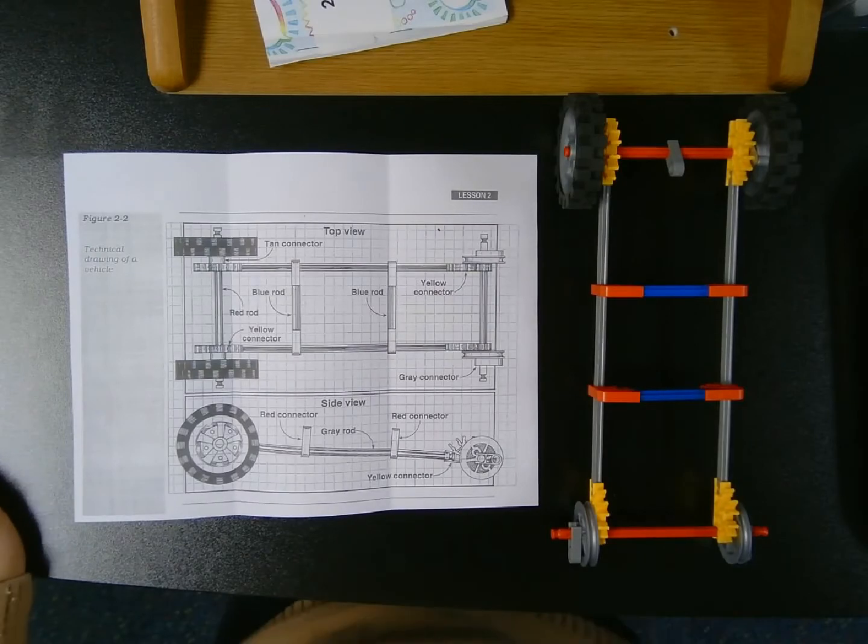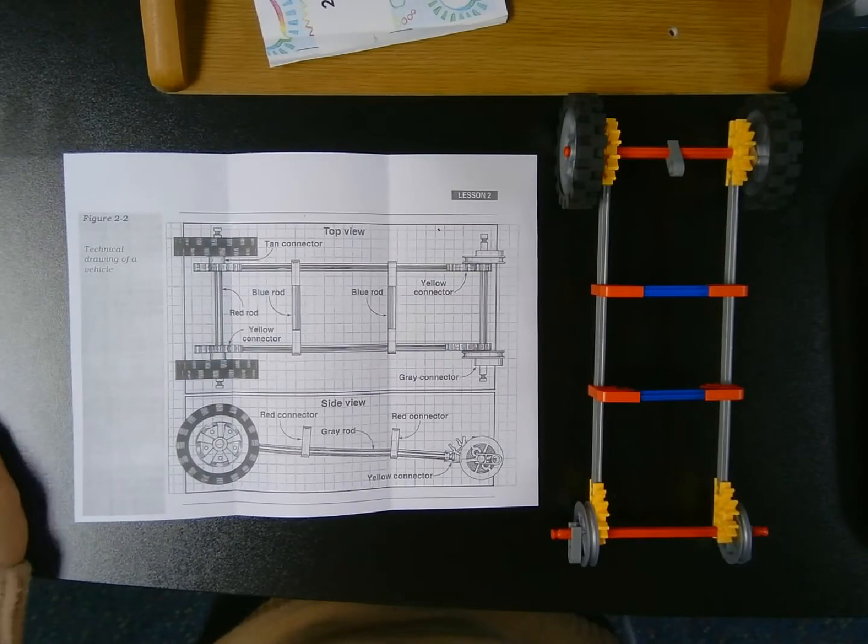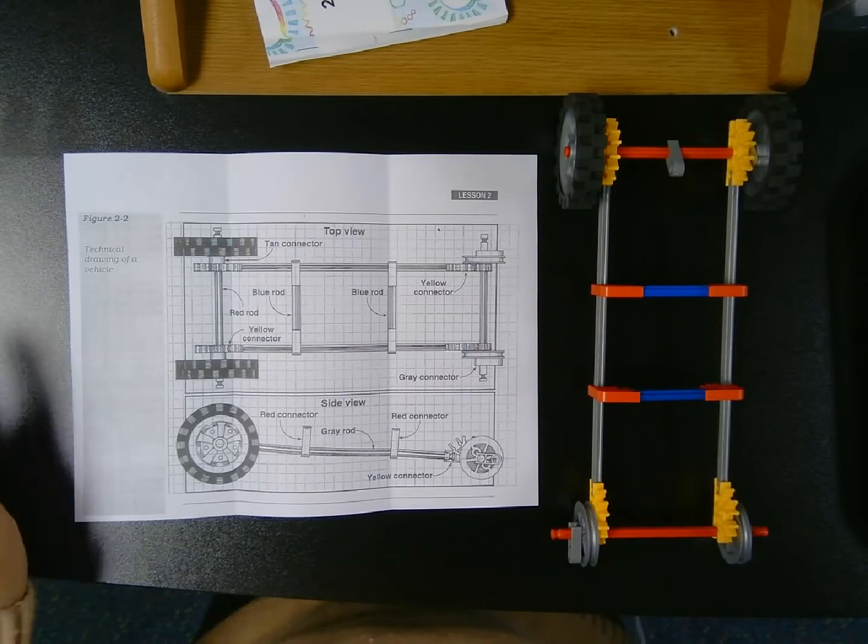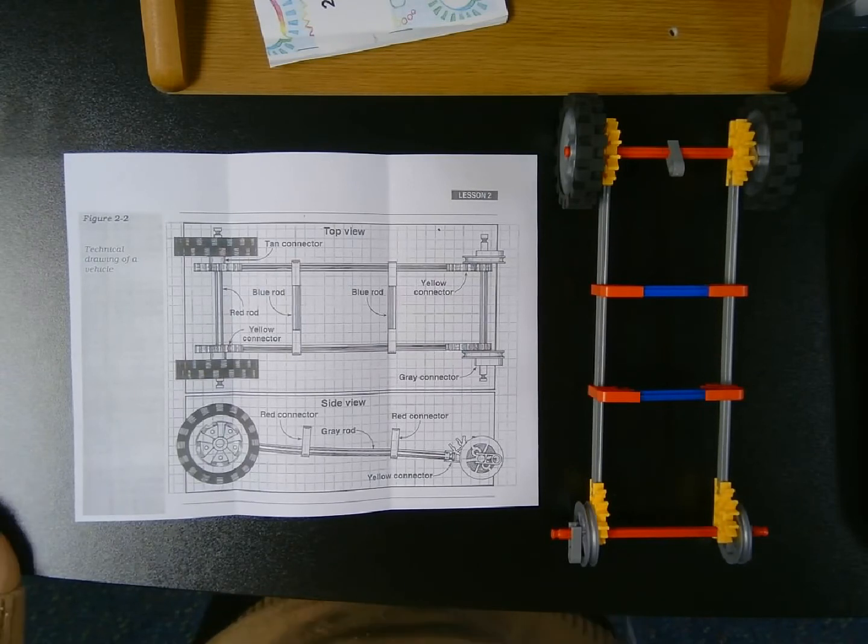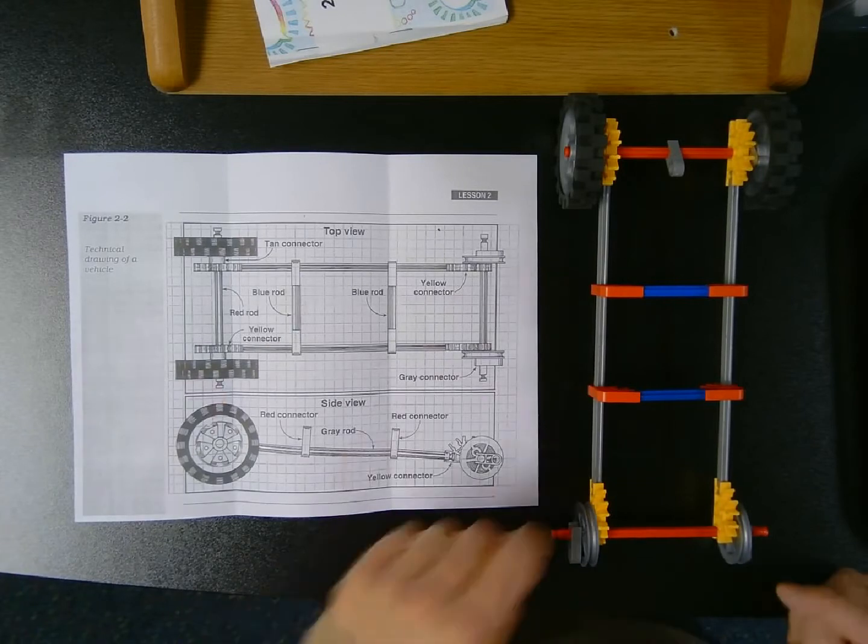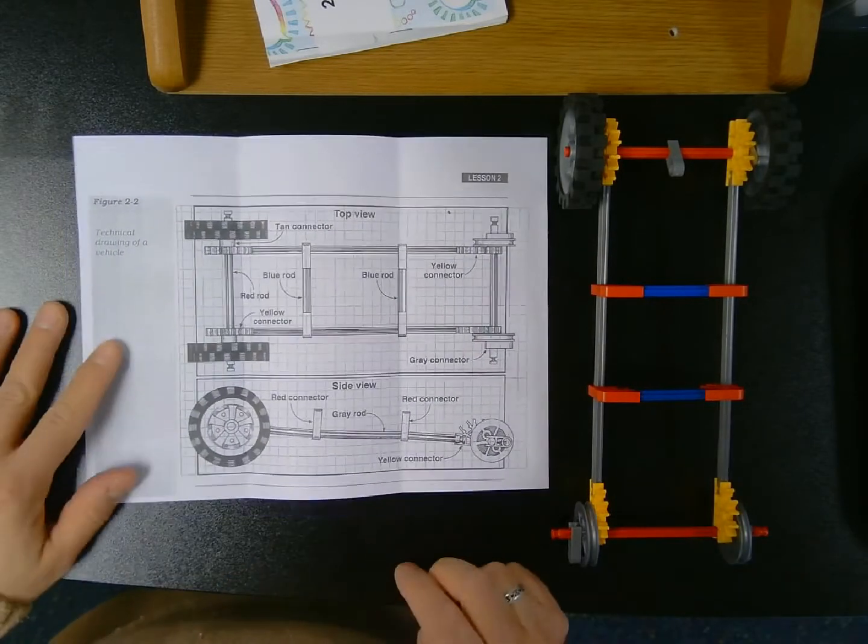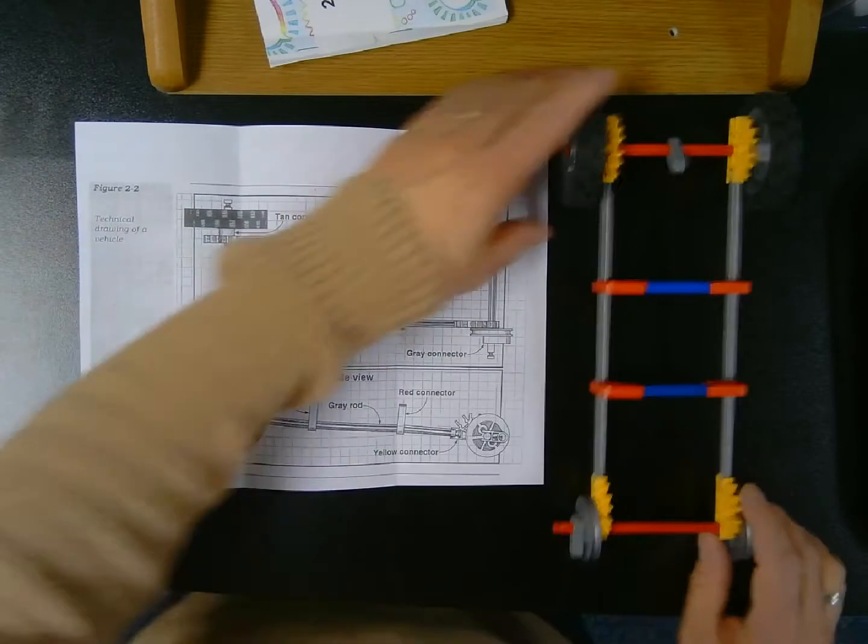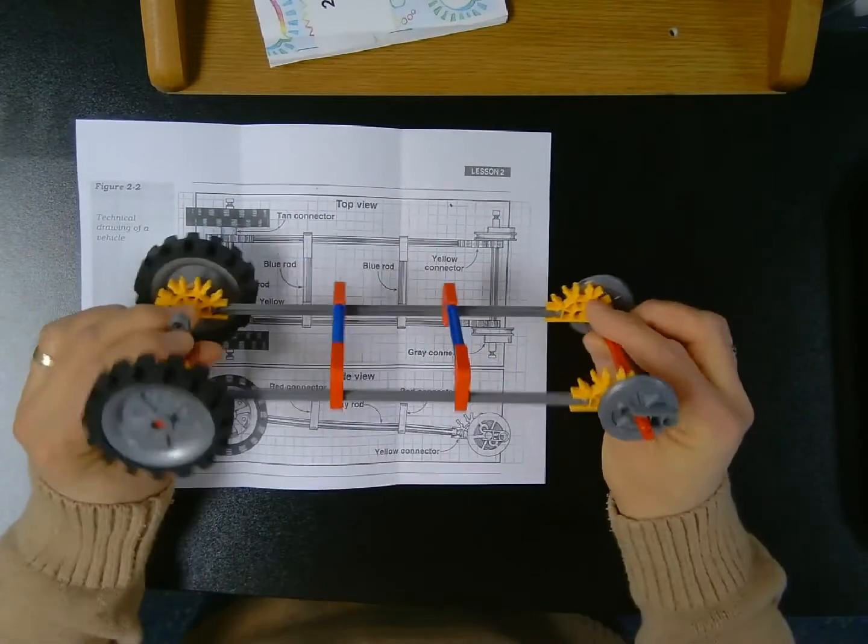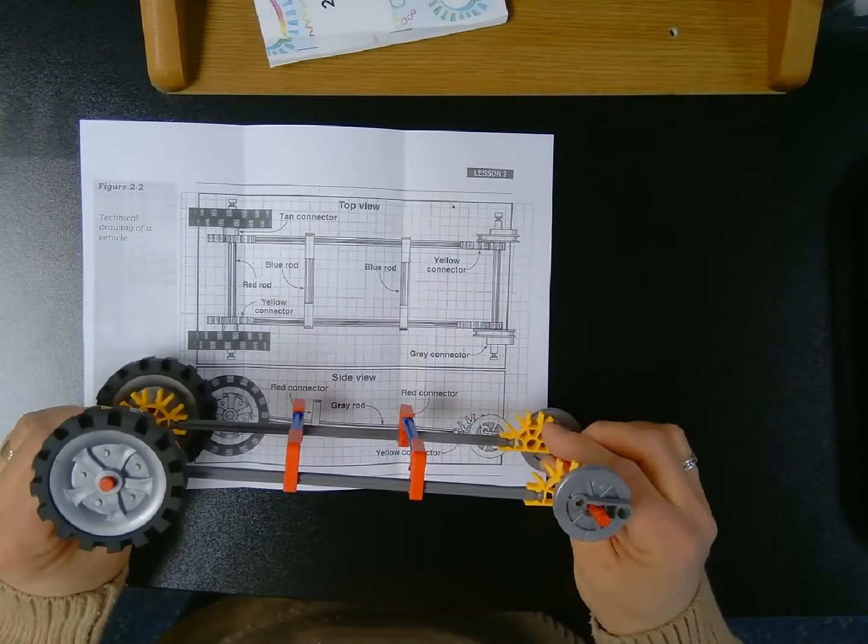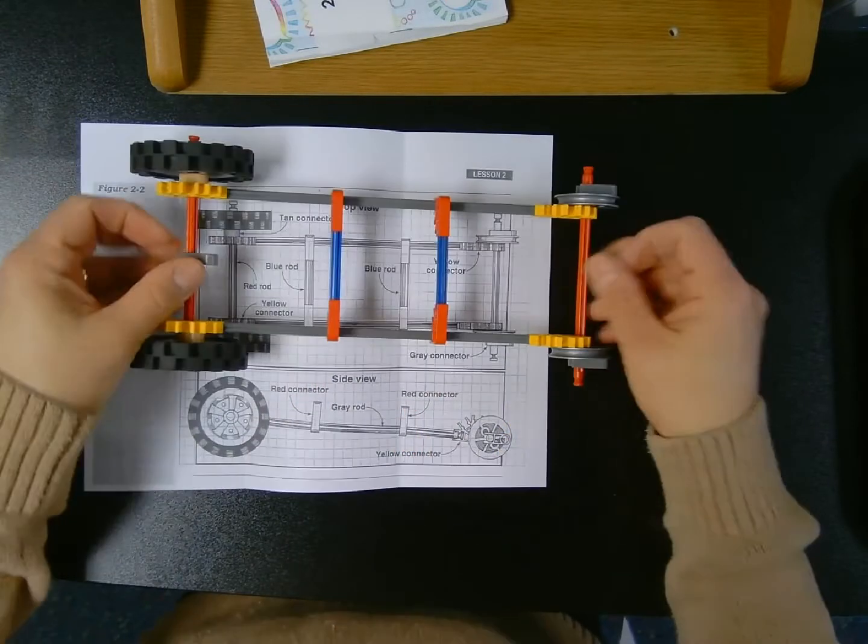Well hi boys and girls, it's Mr. Wassman, and today we are going to learn how to construct our standardized K'nex vehicle that we will be using for all future force and motion experiments during our science unit. As you can see, I have the diagram that I provided to you along with a finished product of what your standardized vehicle should look like, comparing it to the side view and the top view.